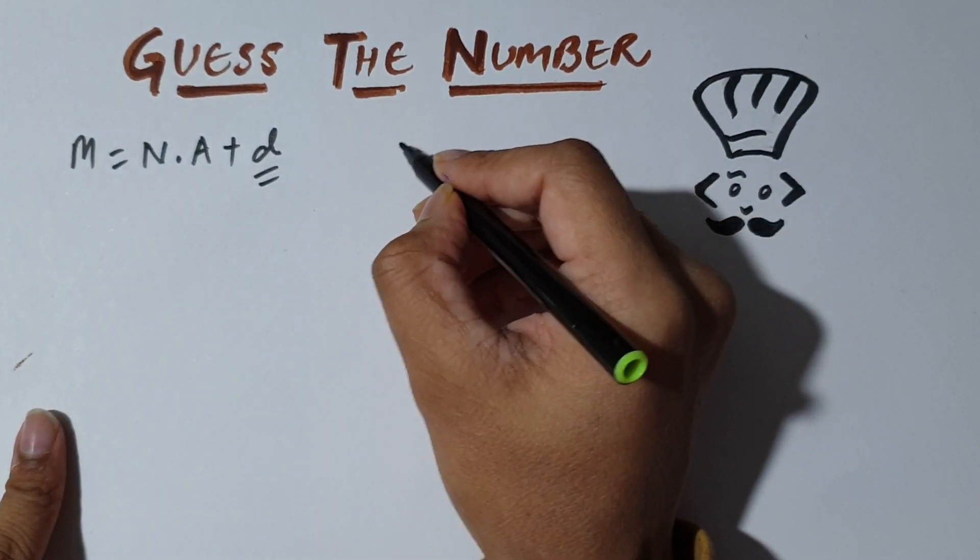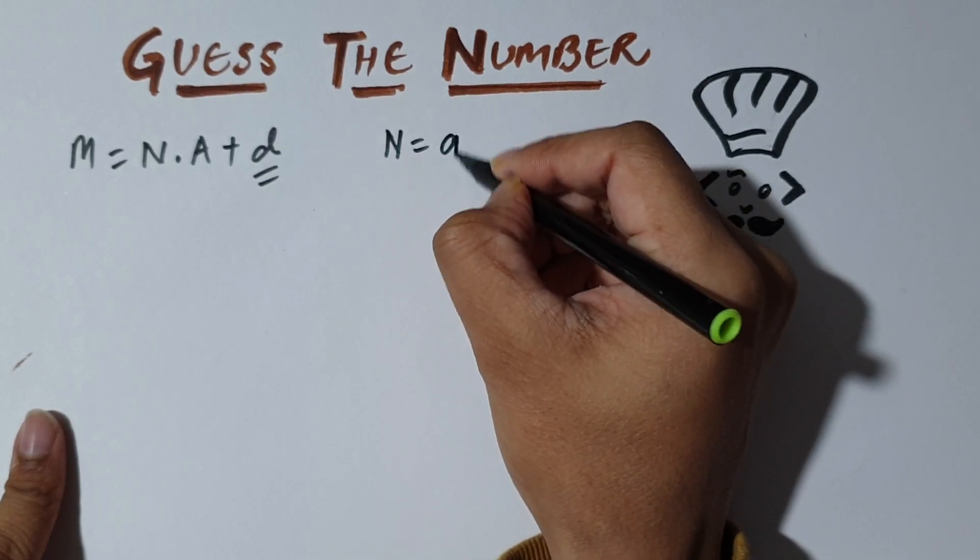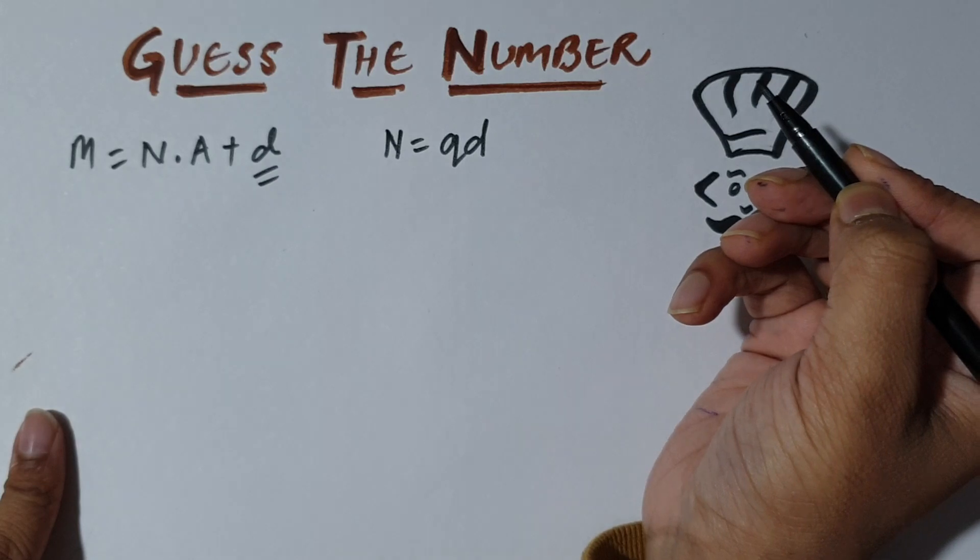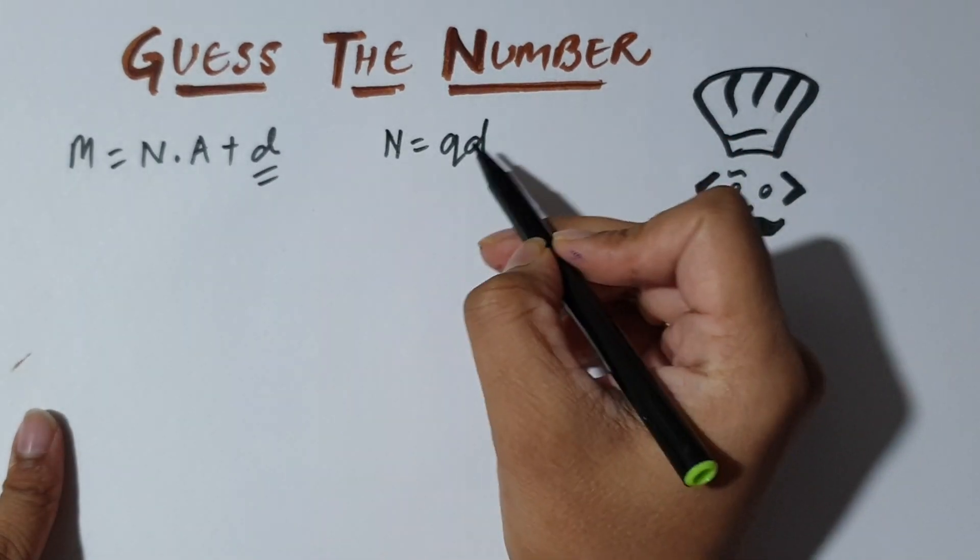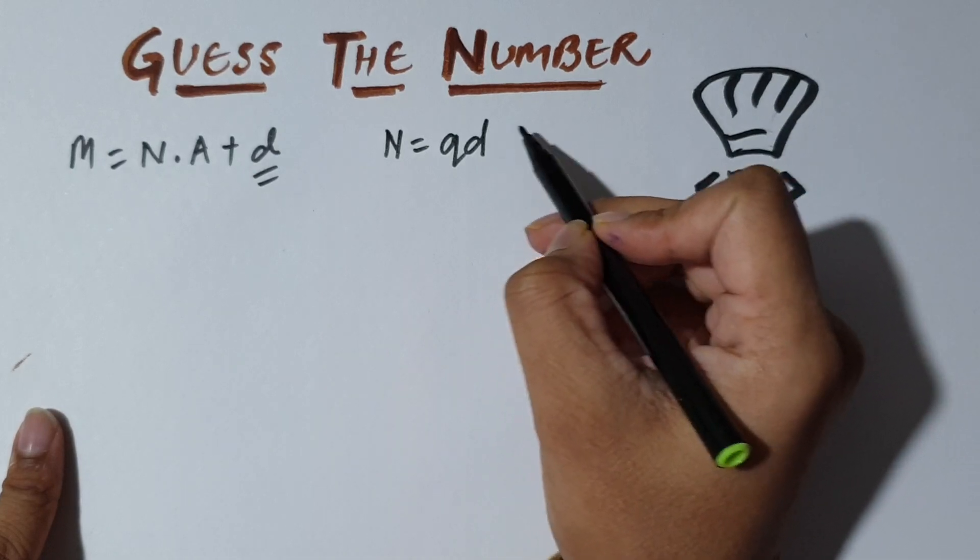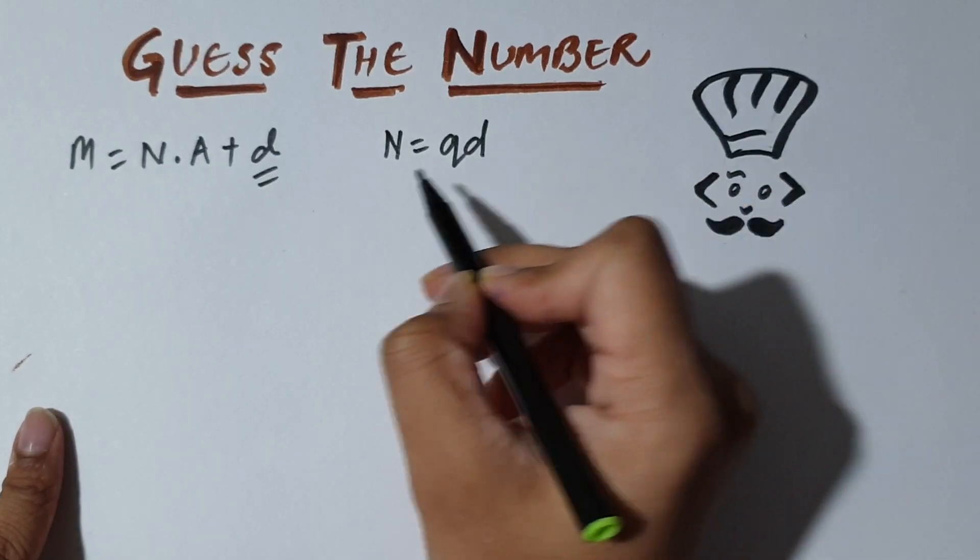And what is N? N is Q times d plus some remainder. If we divide N by d, then what we get is Q into d plus some R. And since d is a divisor of N, that is d completely divides N, so R is 0. So basically N is some quotient into d.